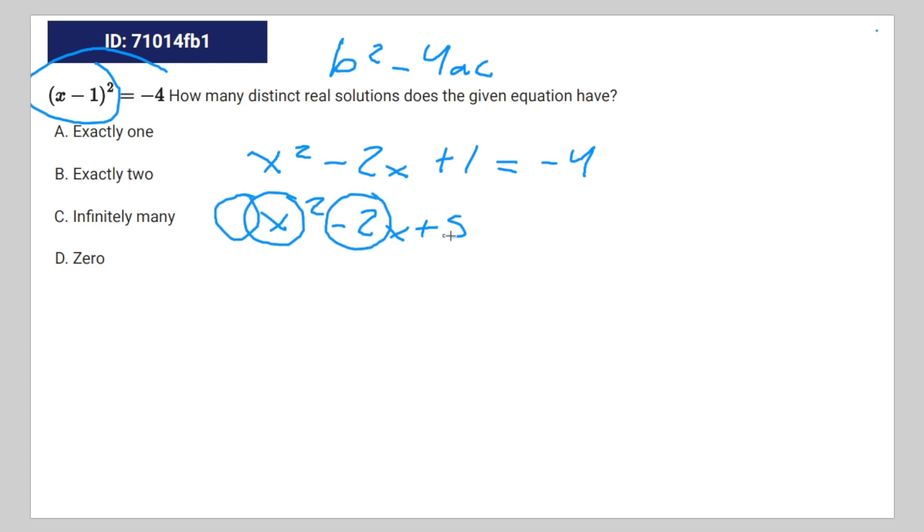Finally we can use the discriminant with 1 as a, negative 2 as b, and positive 5 as c. So that's going to be negative 2 squared minus 4 times 1 times 5.